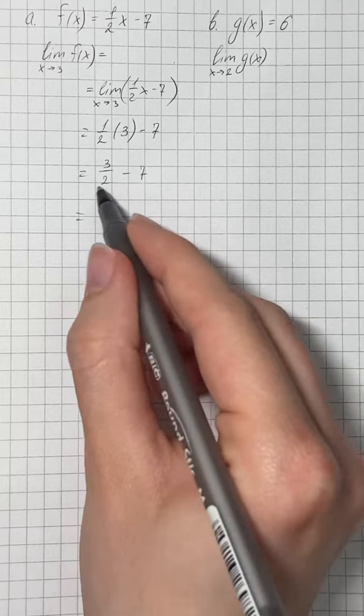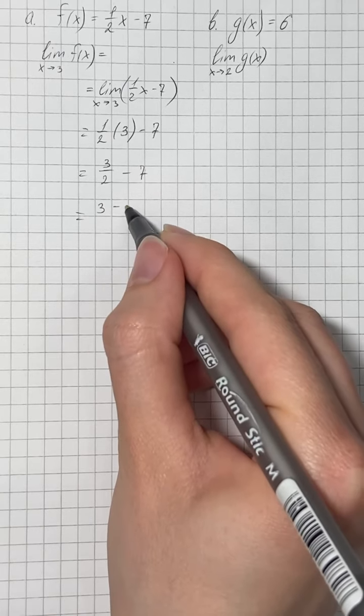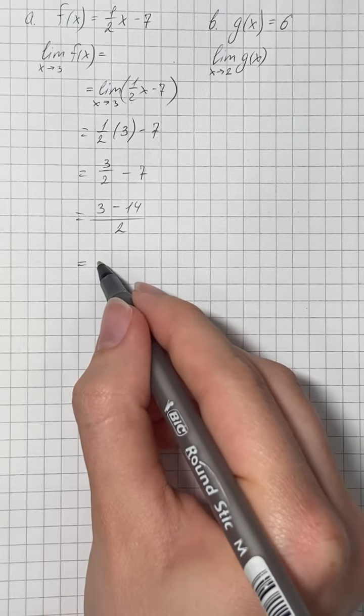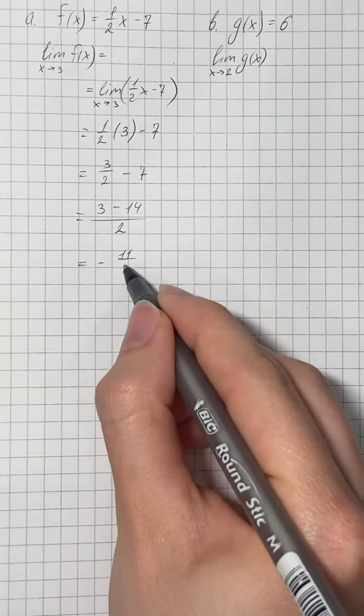Now we make common denominators. That's going to be 3 minus 14 over 2 and our answer is negative 11 over 2.